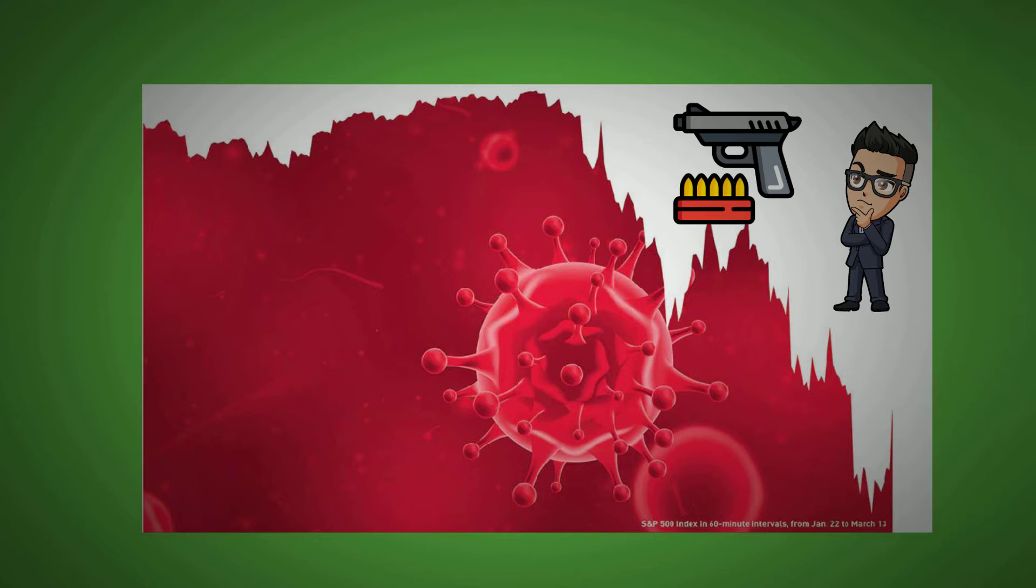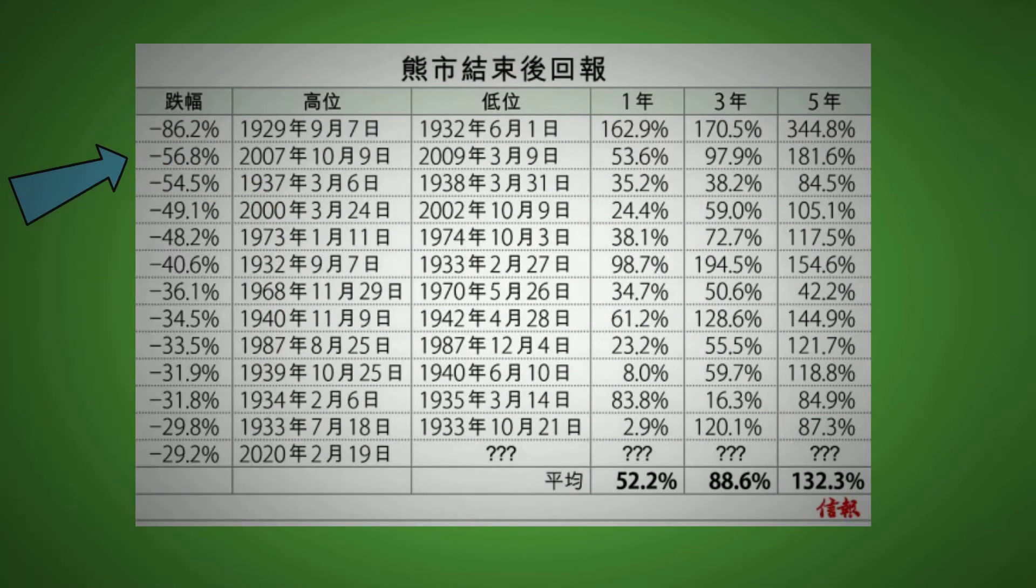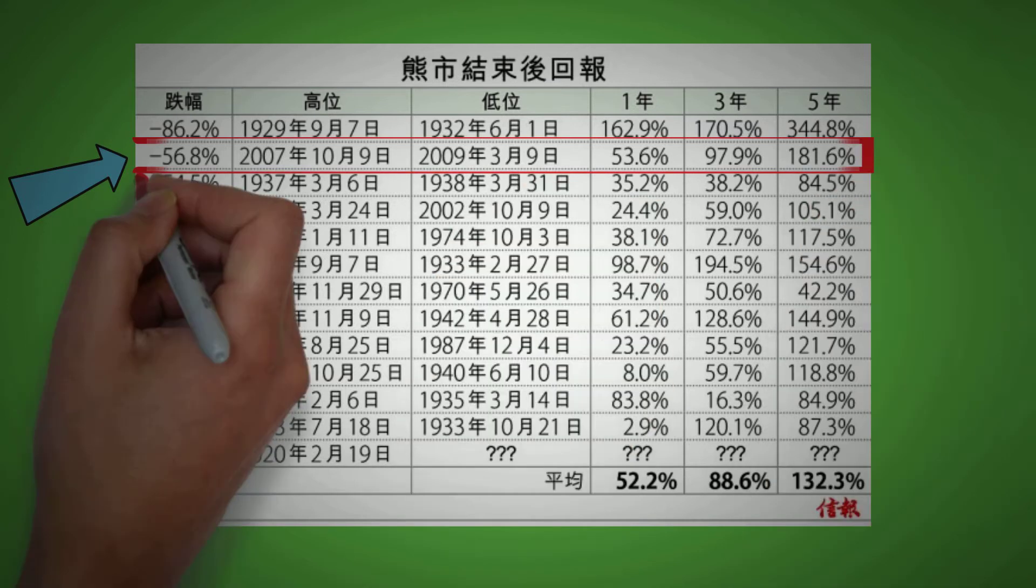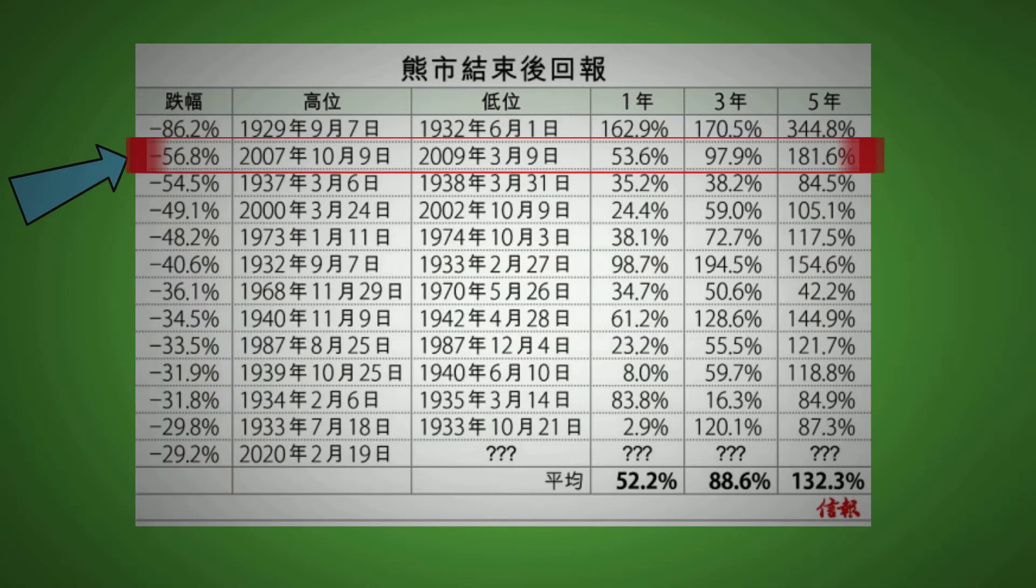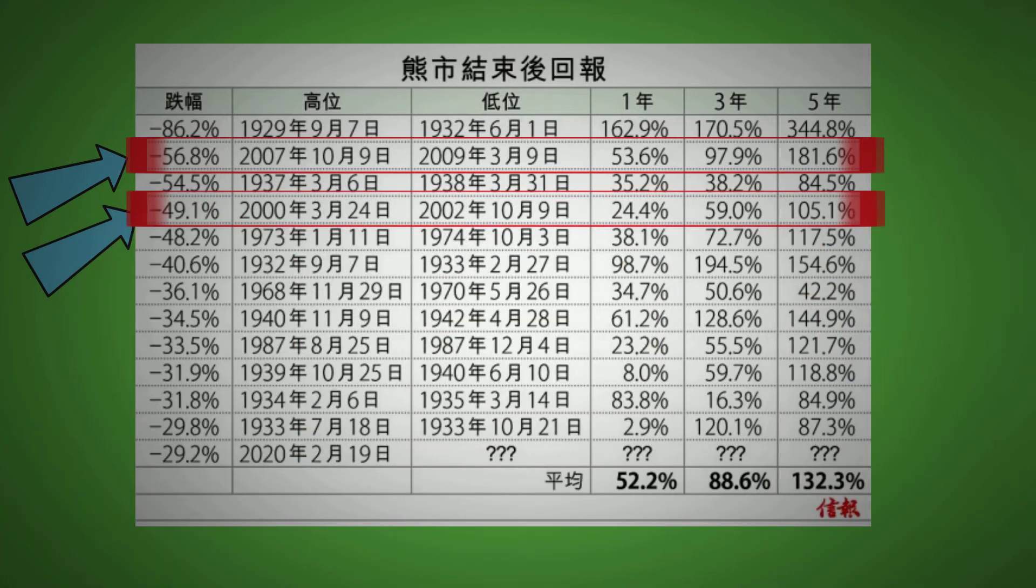Here is a chart showing the returns for every bear market bottom. We'll look at the two most recent ones in particular. For the 2007 financial crisis, the market dropped 56.8% within the span of 16 months. Then the 1 year return from the bottom is 54%, 3 year is 98%, 5 year is 182%. For the 2000 dotcom bubble that tanked the market 49.1%, it lasted 31 months. 1 year return from the bottom is 24%, 3 year is 59%, 5 year is 105%.